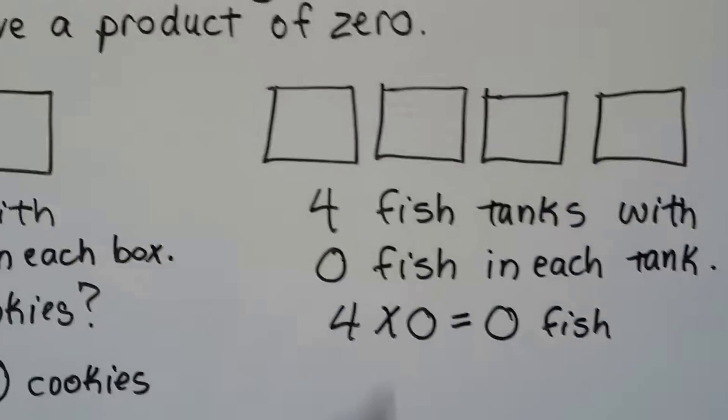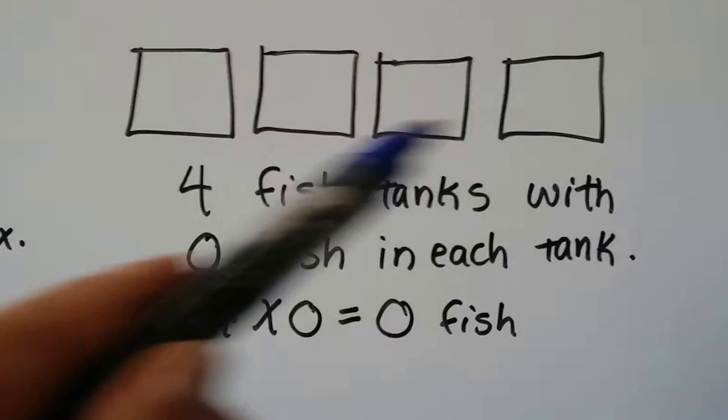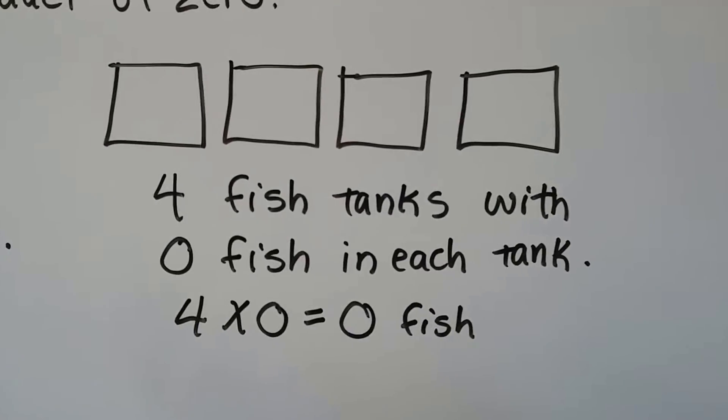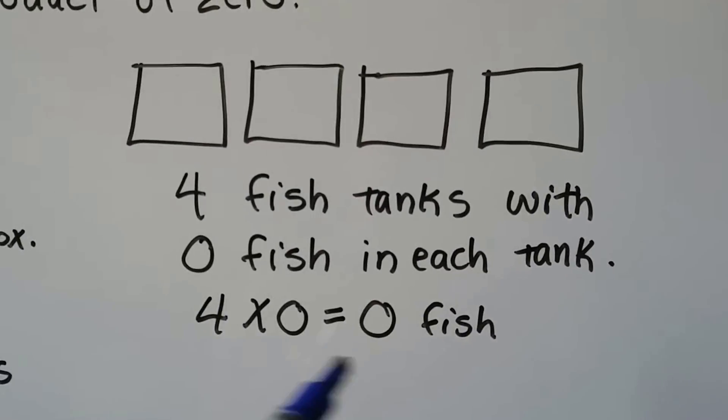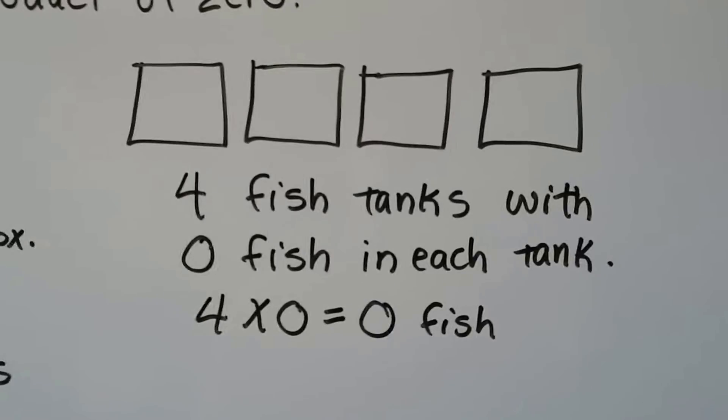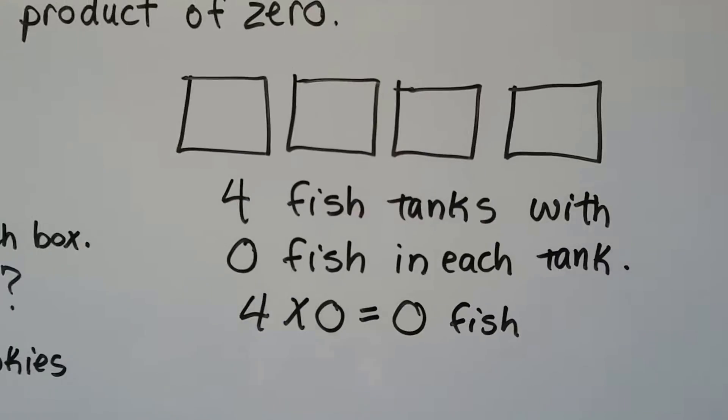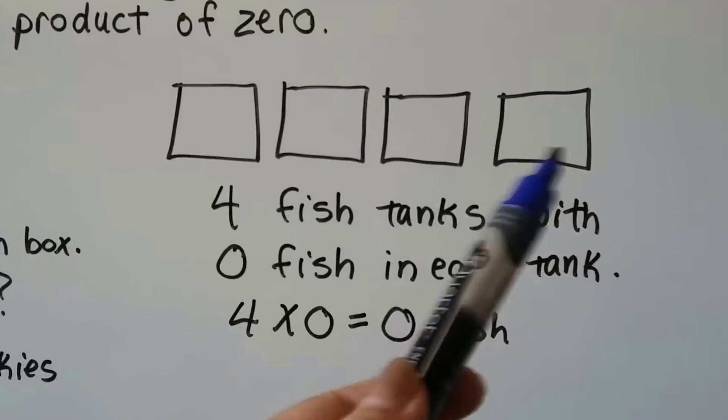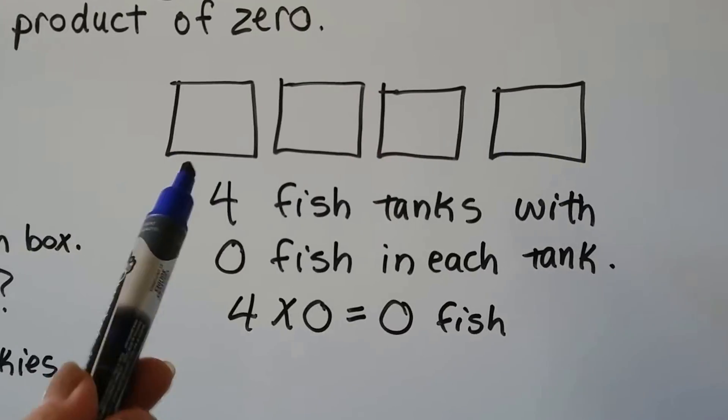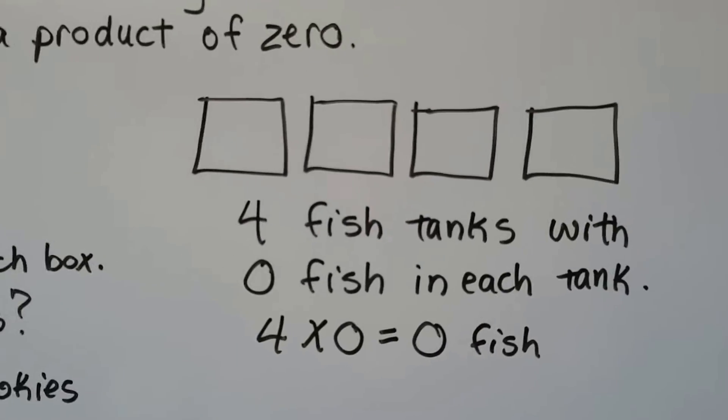If we had 4 fish tanks with 0 fish in each tank, how many fish do we have? 0. 4 times 0 fish is 0 fish. There's no fish in the tanks. So it doesn't matter how many tanks we had. If there's no fish in them, we're going to have 0 fish.